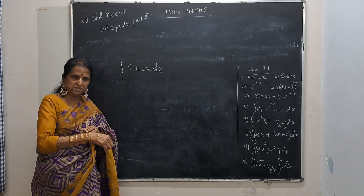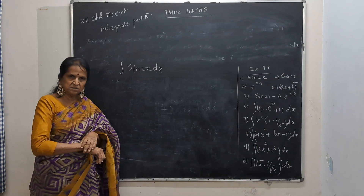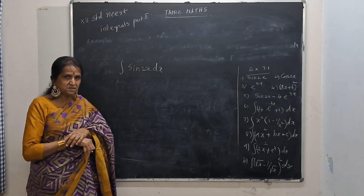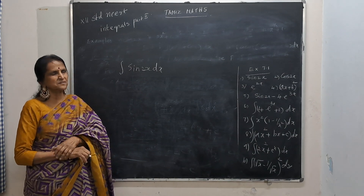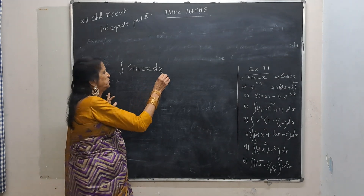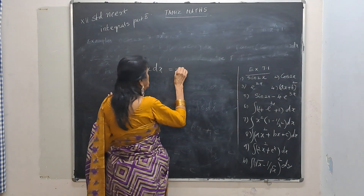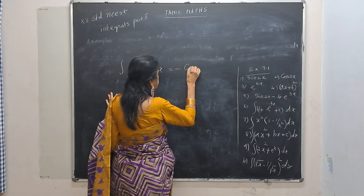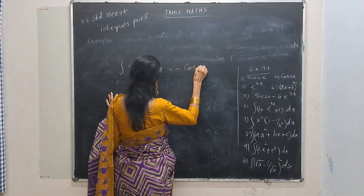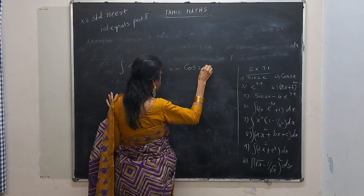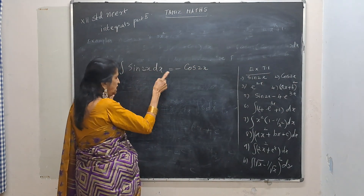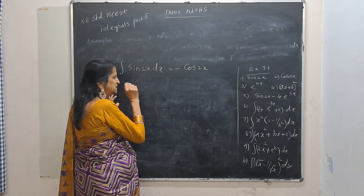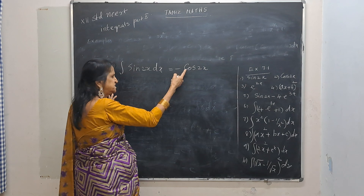What is the integral of sine? It is minus cos. So you write minus cos 2x. But when I differentiate, a factor of 2 will be extra. So divide by 2, giving minus cos 2x divided by 2 plus c.